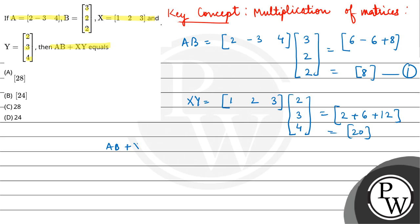So AB plus XY is equal to 8 plus 12, which equals 20. So you have a 1 by 1 matrix here. So the final answer is option A. I hope you understood it well. Best of luck.